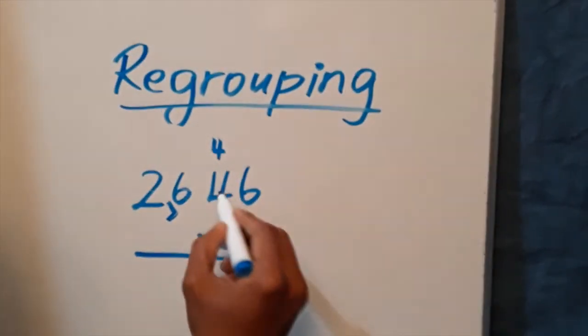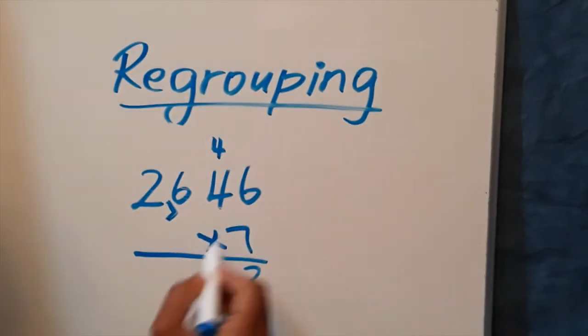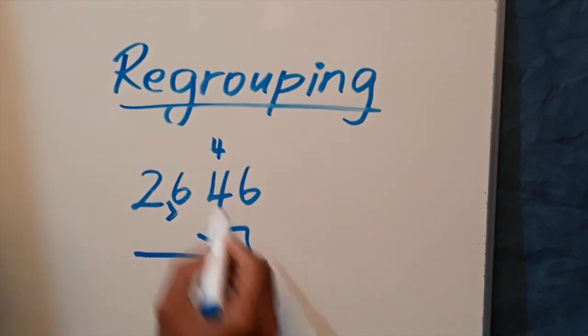Seven times 4 is 28. You regroup 28 plus 4 is 32, with the 2 in the tens column and the 3 over the hundreds.